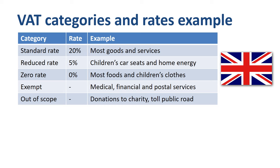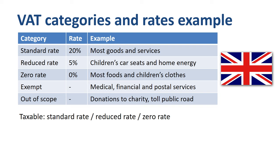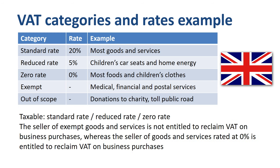The first three categories — standard rate, reduced rate, and zero rate — are considered taxable goods and services. Even though at first glance the zero rate category and the exempt category look the same, there is a big difference on the input tax side. The seller of exempt goods or services, like a bank, is not entitled to reclaim VAT on business purchases, whereas the seller of goods and services rated at 0% is entitled to reclaim VAT on business purchases.